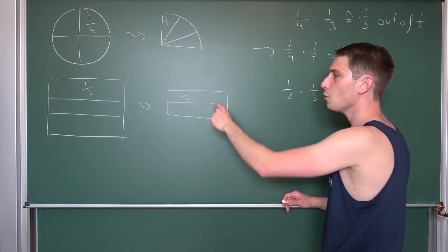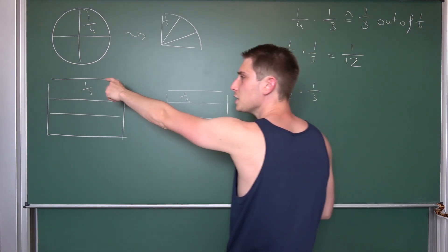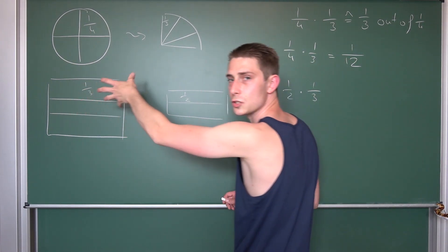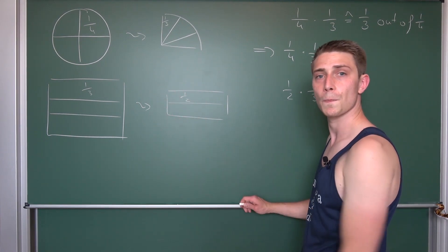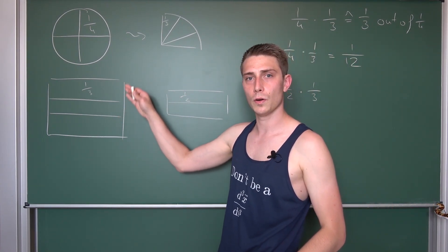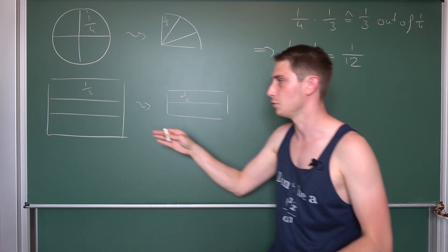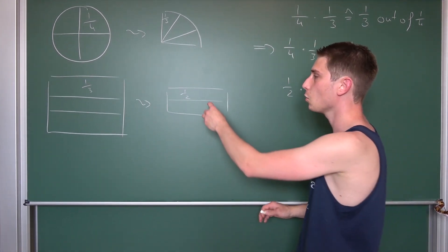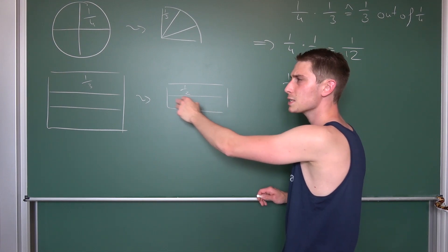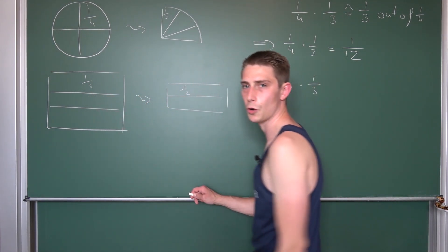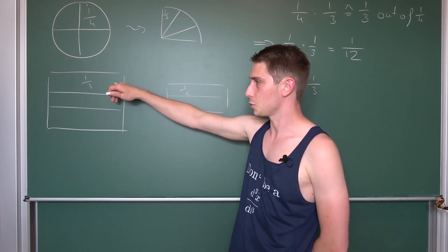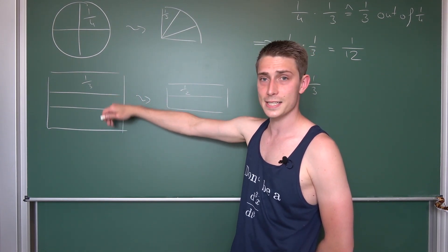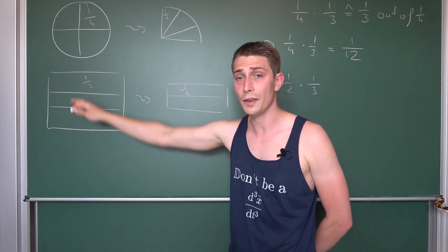And now you are just going to count how often this one half does fit into this whole structure, into this whole square. And then you are just going to count how many parts you have to fill in, just what we did up here basically. So one half fits two times into one third.